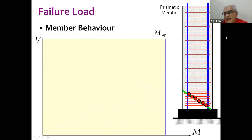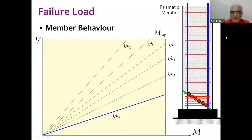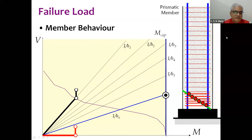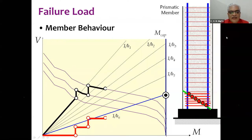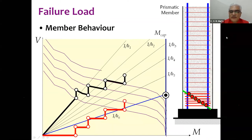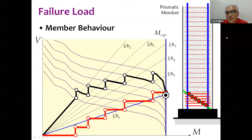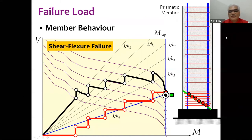Changing the crack angle or spacing the stirrups closer results in six stirrups crossing the crack. In this case the shear strength of the member and the flexural capacity are very close to each other. The lower one governs, so the flexural capacity is reached — this is called a shear-flexure failure because the two strengths are very close.